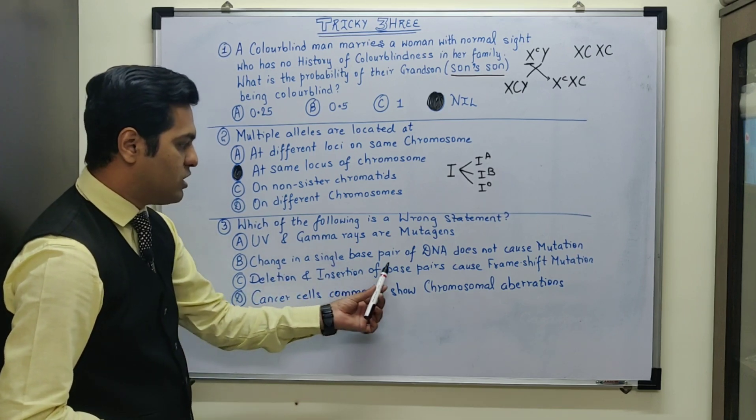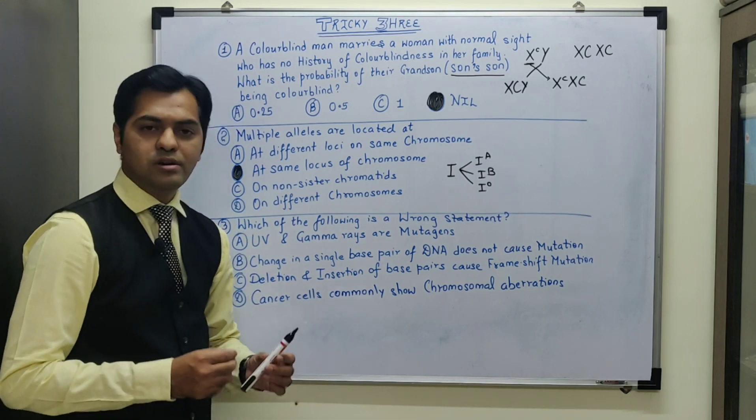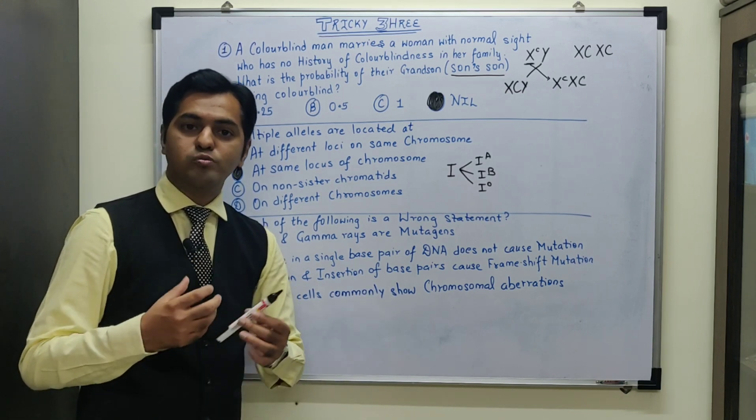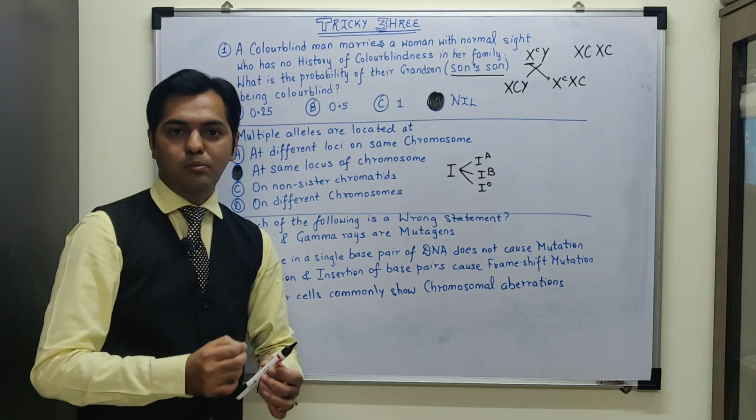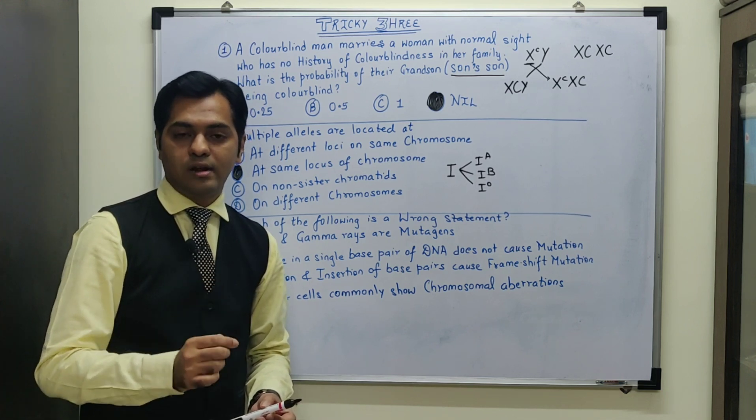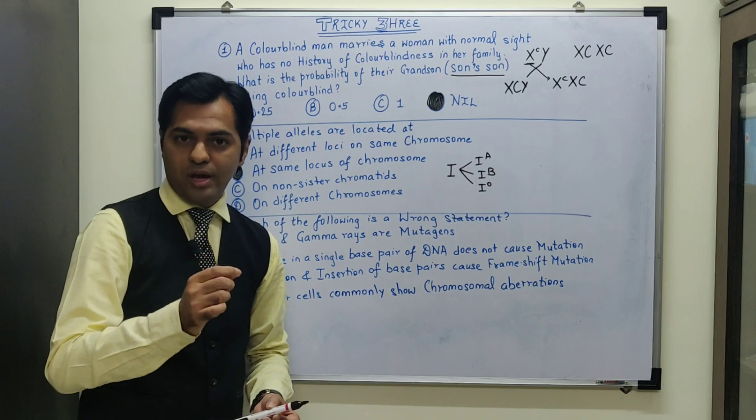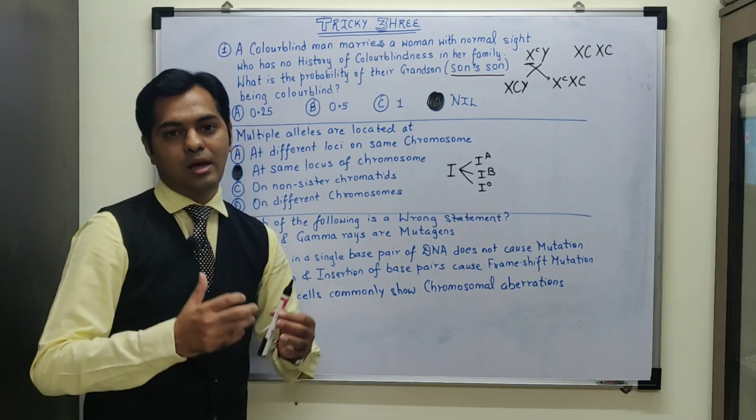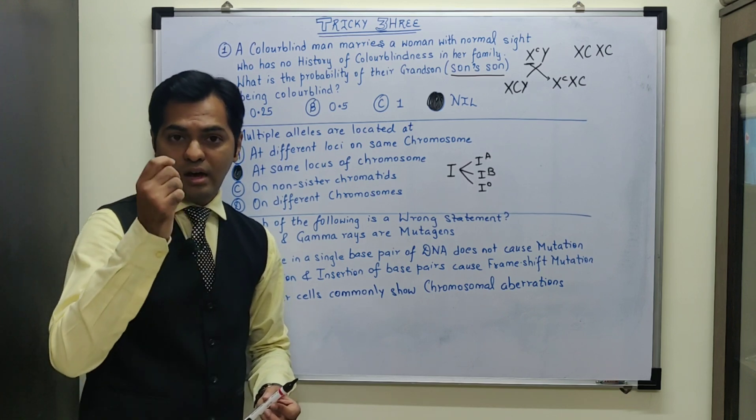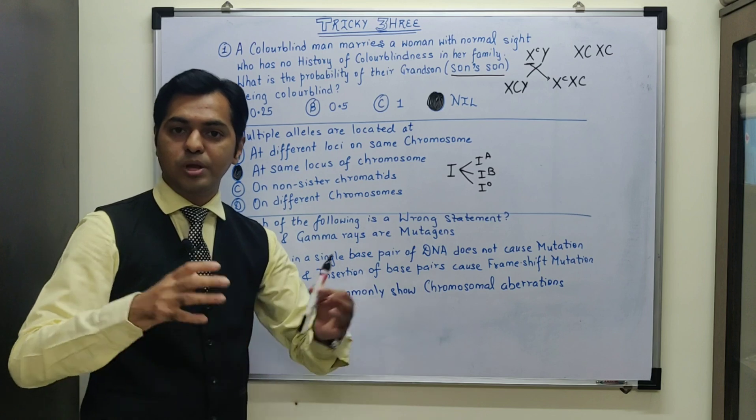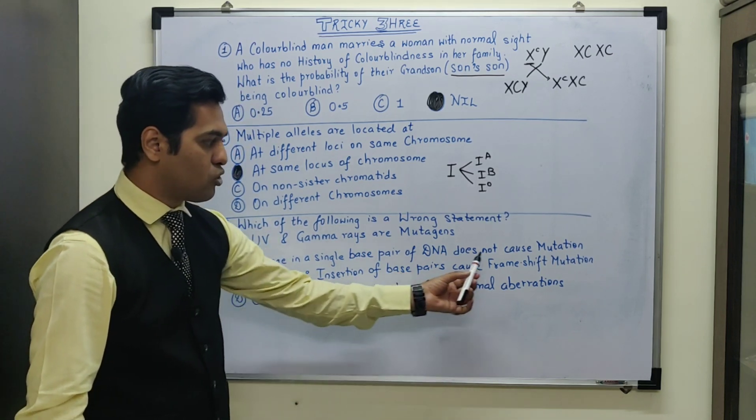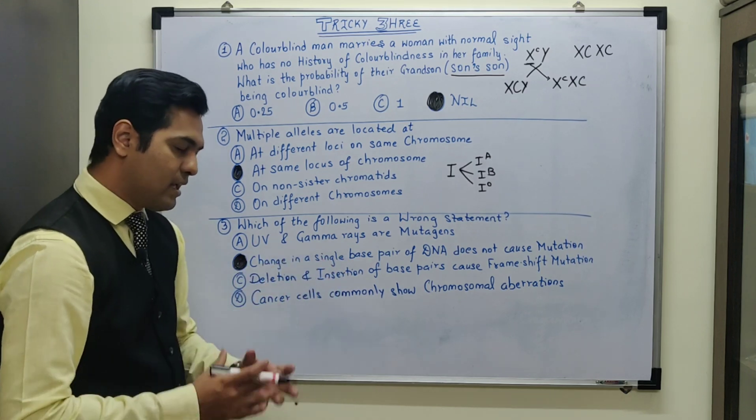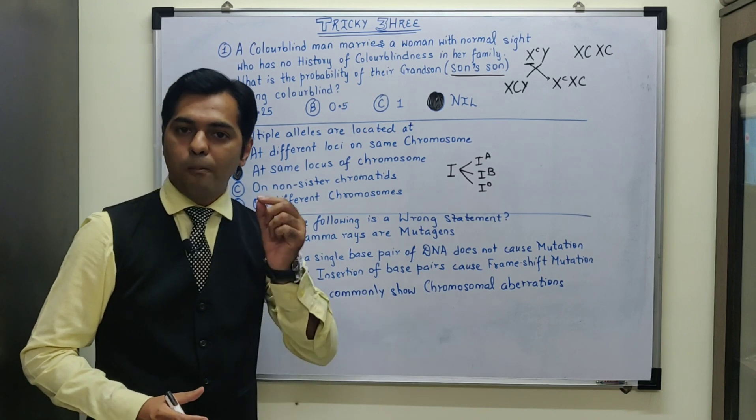Another statement is change in a single base pair of DNA does not cause mutation. We have studied certain examples like sickle cell anemia where hemoglobin A undergoes mutation, and it gets transformed into a mutated hemoglobin S gene wherein the mutation occurs exactly at the sixth position of beta globin chain. At the sixth position, the codon for normal glutamic acid is replaced by an abnormal amino acid, valine, wherein a single nitrogen base changing creates such a big mutation. So here it is mentioned that single base pair does not cause mutation, then definitely it's a wrong statement. We have studied in sickle cell anemia that a single mutation of a nitrogen base can cause mutation. Hence we call such a mutation as point mutations.